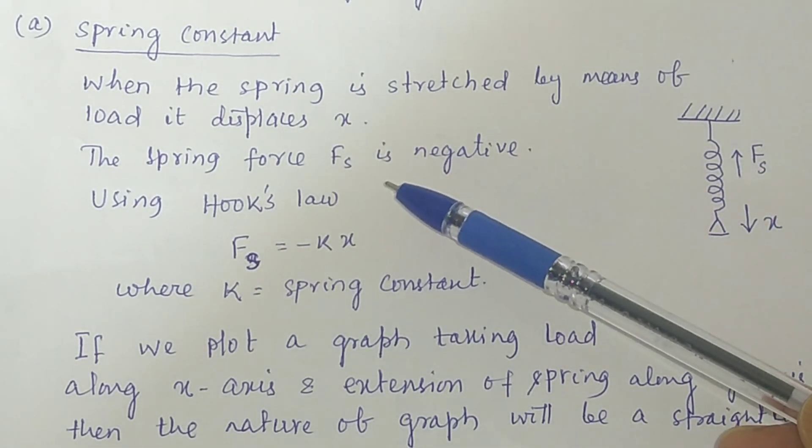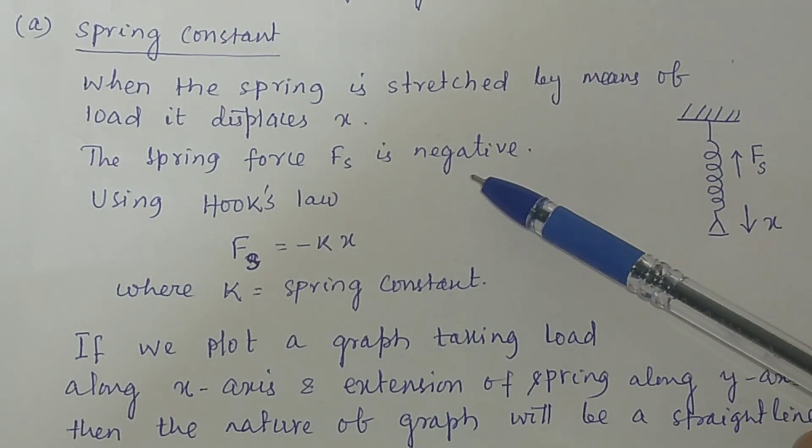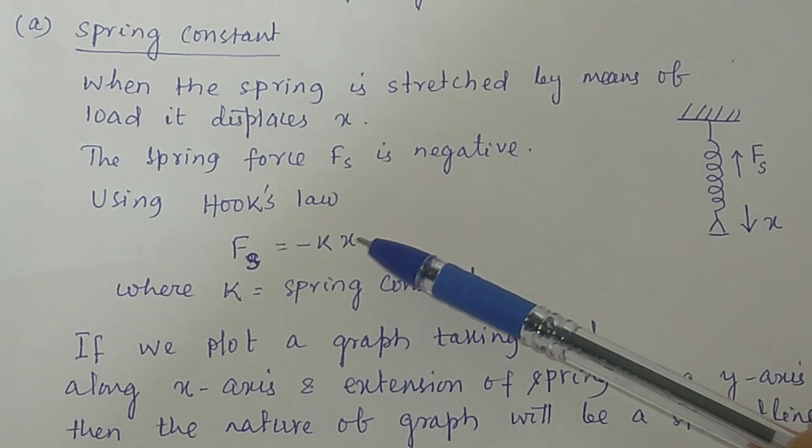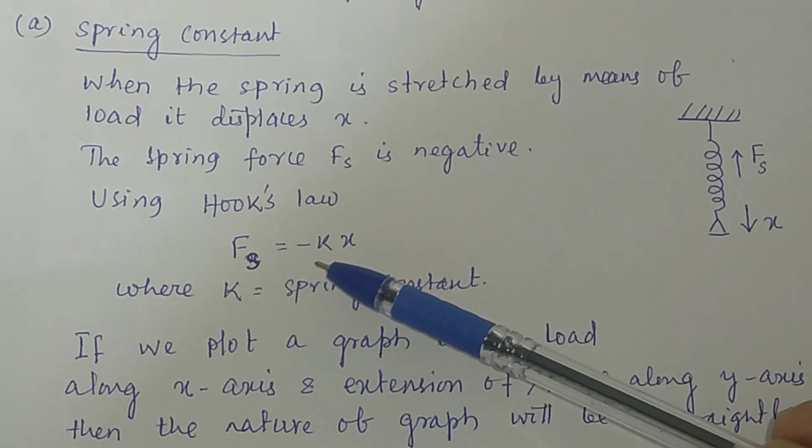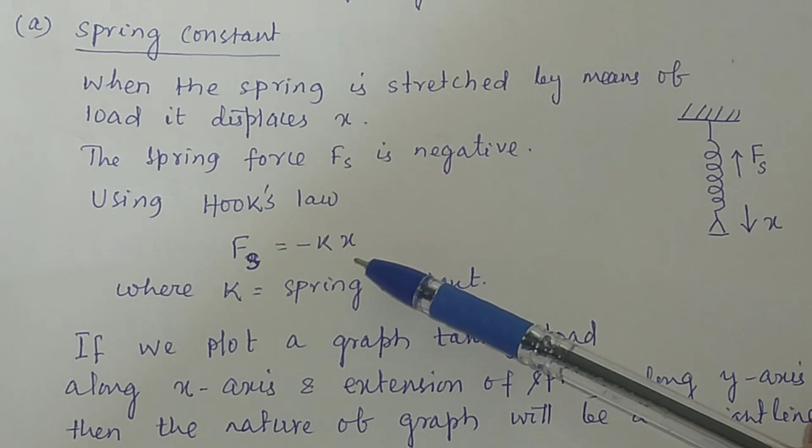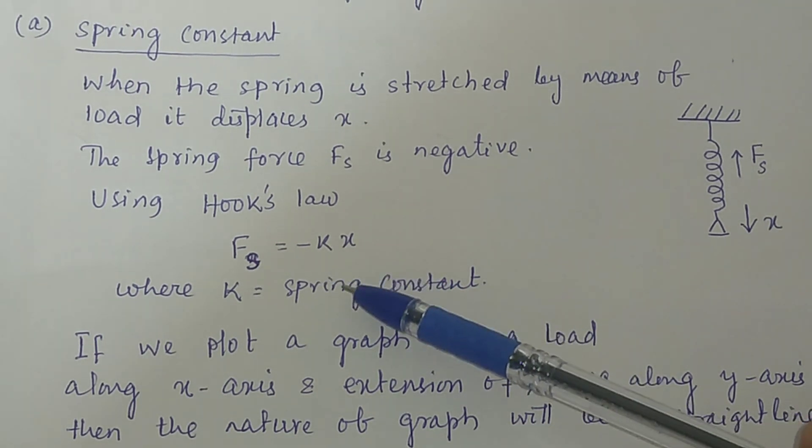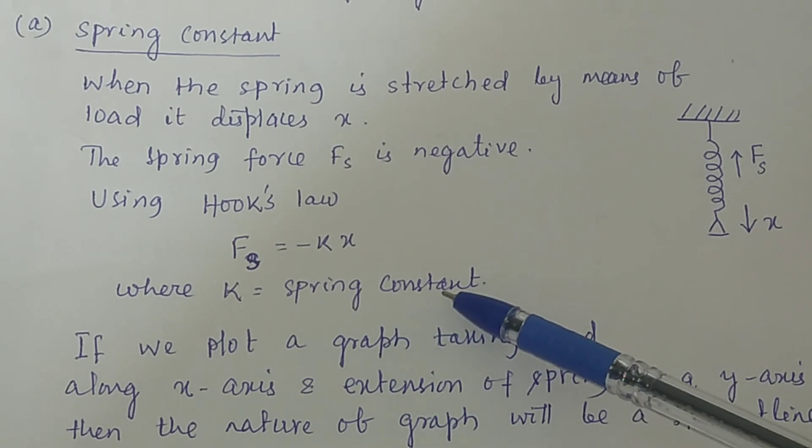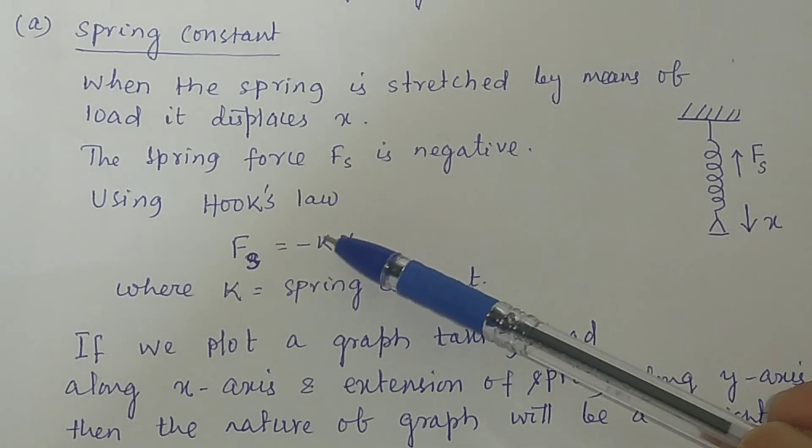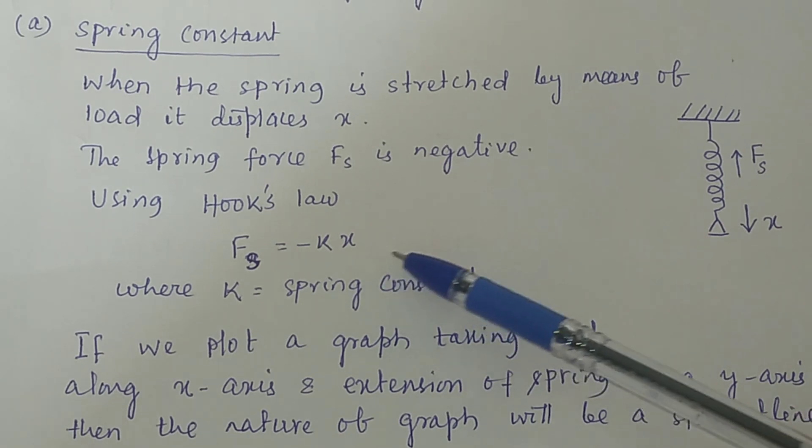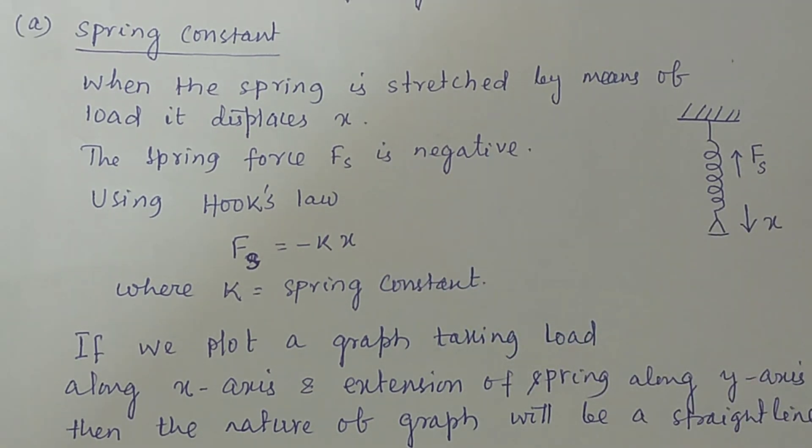Here we have taken the spring force Fs as negative. And if you use Hooke's law, then Fs will be equal to minus k into x, where x is the extension and k is called the spring constant. Our aim is to find out the value of spring constant of the supplied spring.